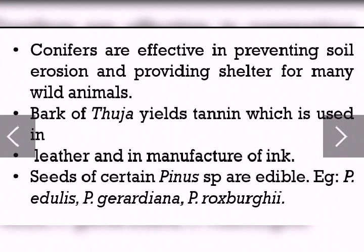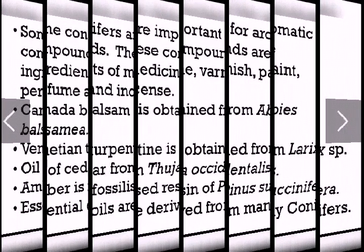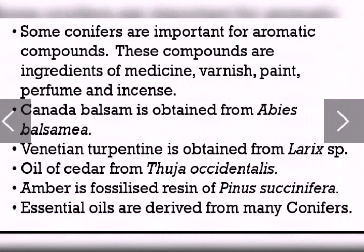The bark of Thuja yields tannin, which is used in the leather industry and also in the manufacture of ink. The seeds of certain species of Pinus are edible. Conifers also yield aromatic compounds that are used as ingredients in medicine, varnish, paint, and perfume.